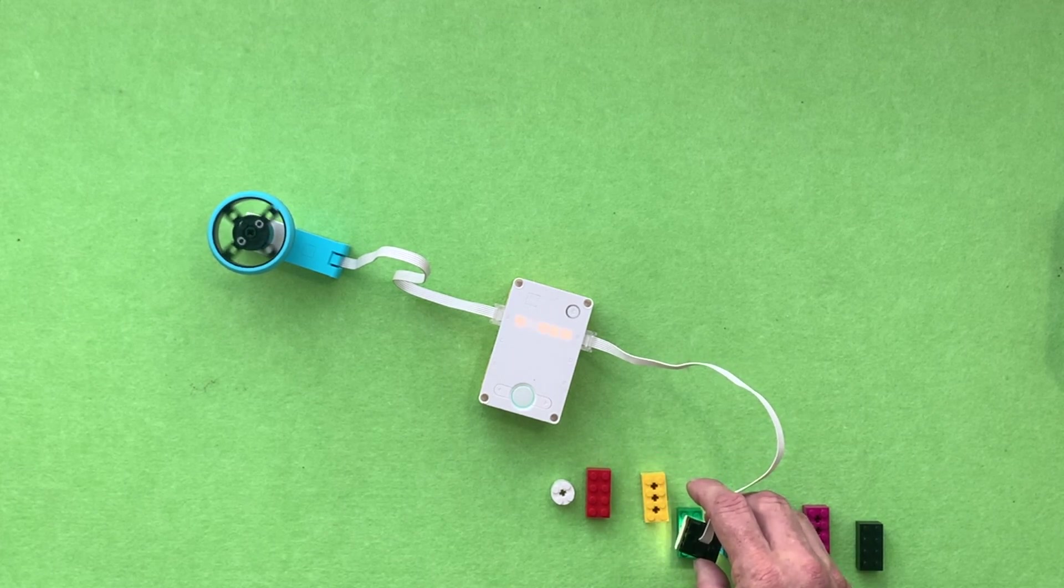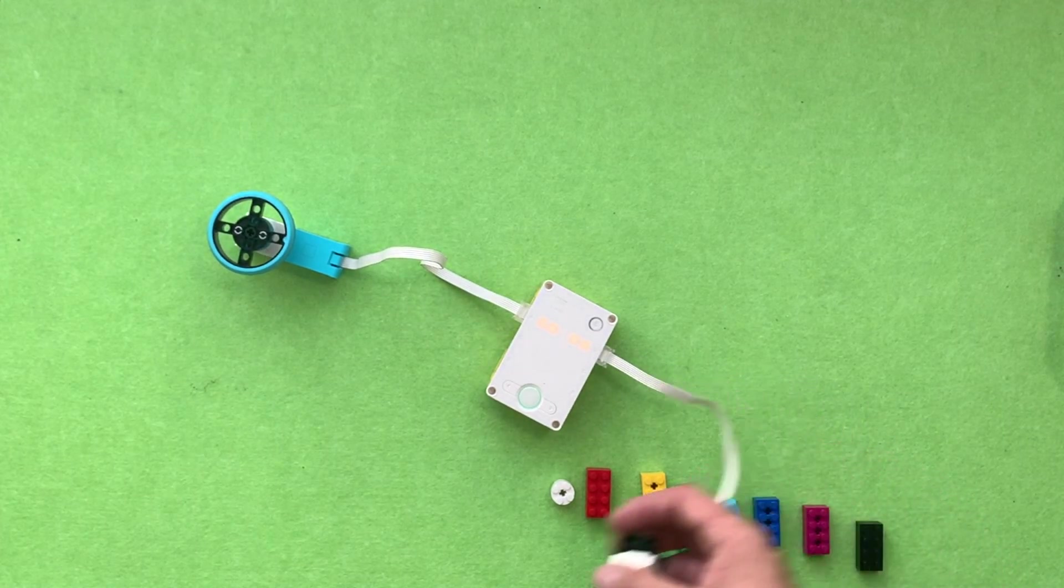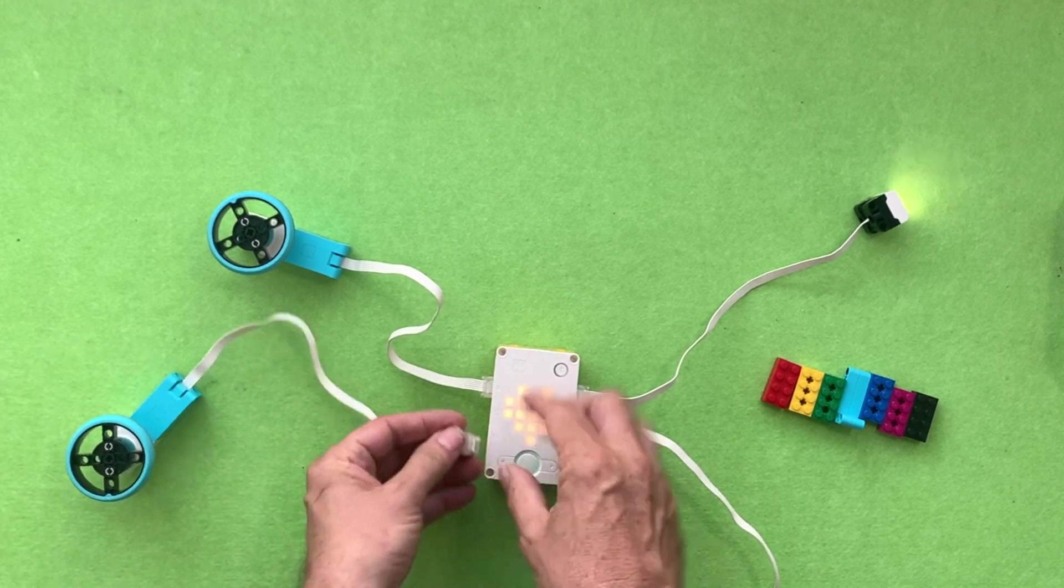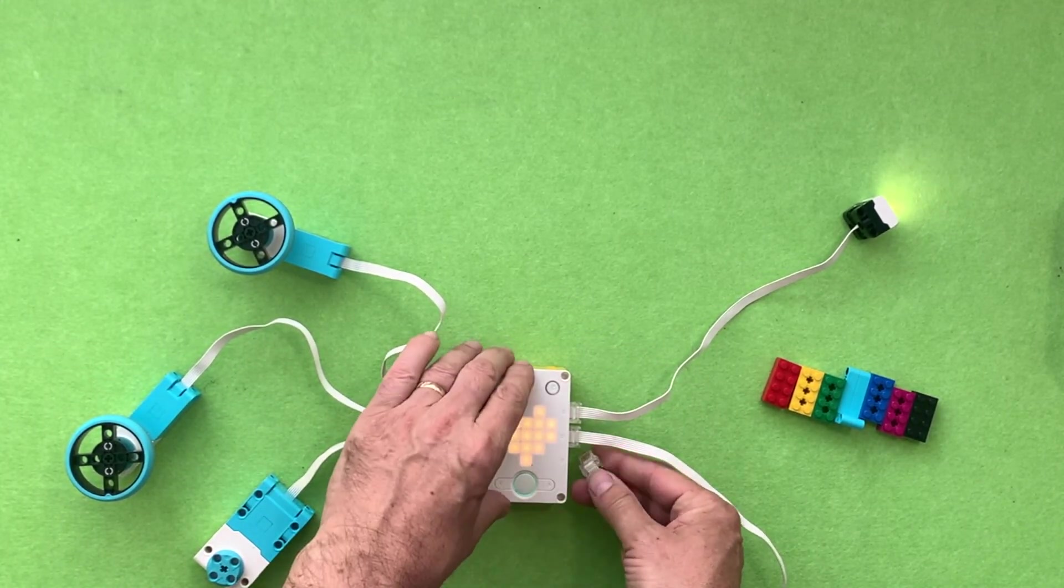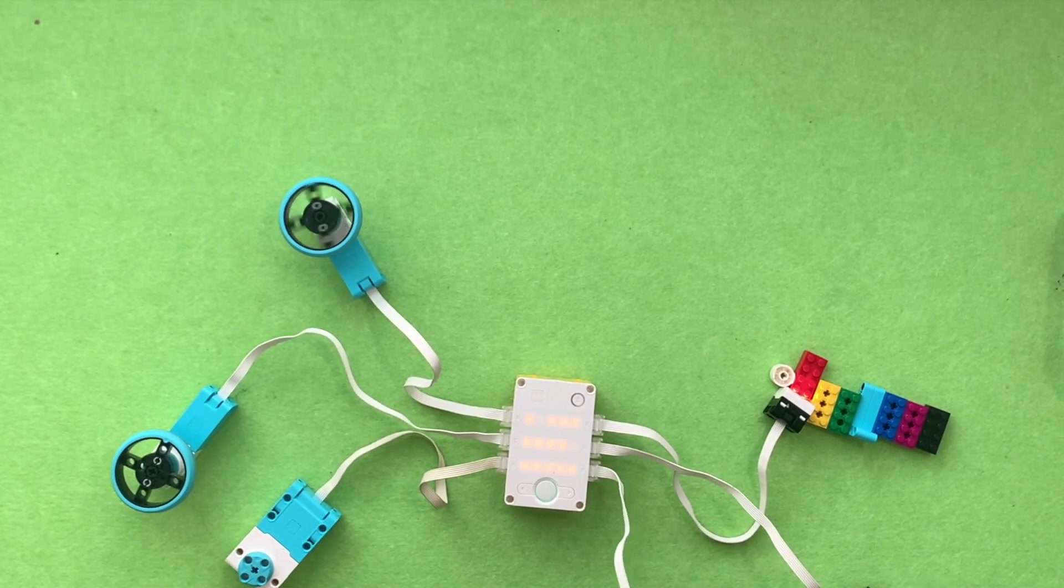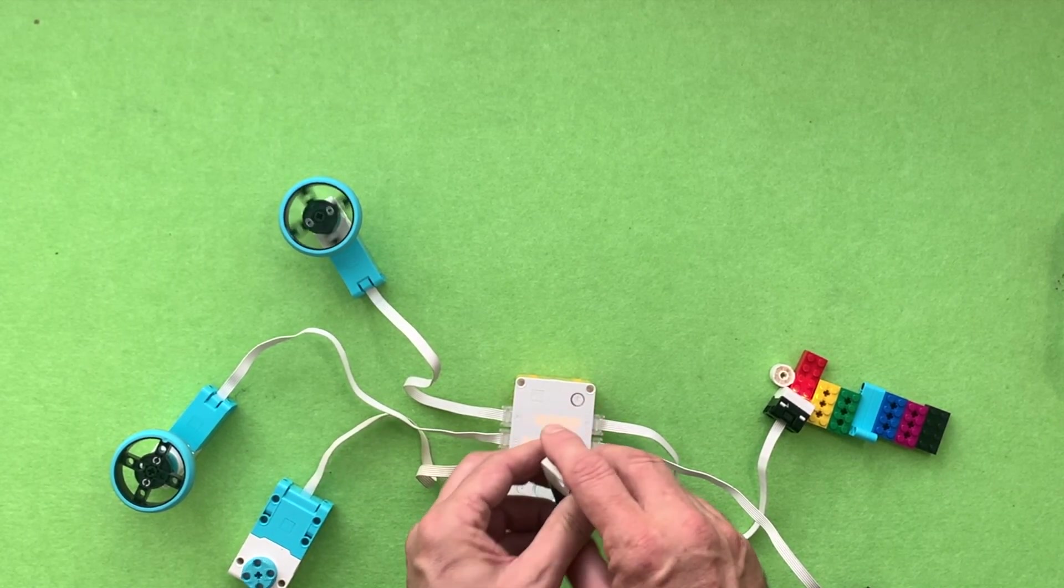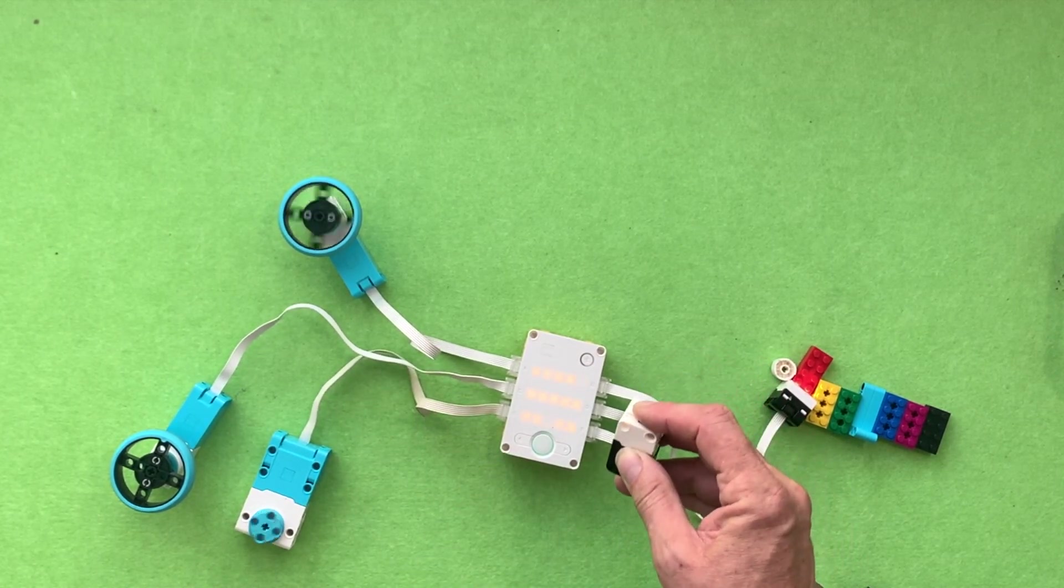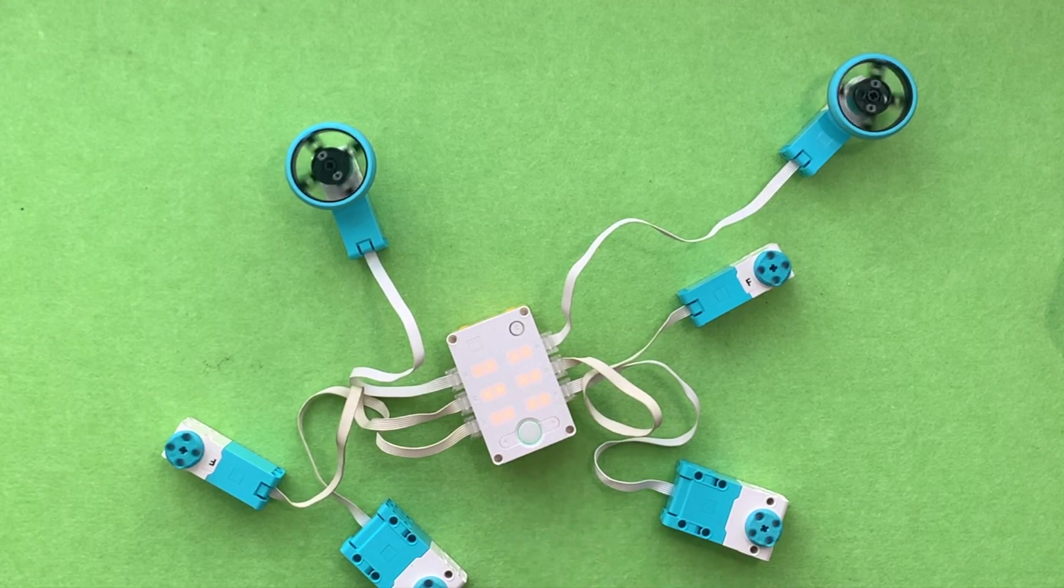So you could make something that reacts to different colors, makes the motors go at different speeds. You could even try and plug in all the motors and all the sensors, and get one motor controlled by the color sensor, one motor controlled by the distance sensor, and one motor controlled by the force sensor. Or another thing you could do is just plug in six motors and have them all running at once.